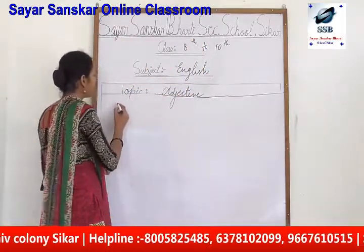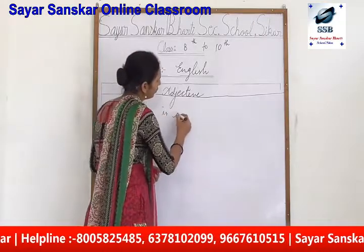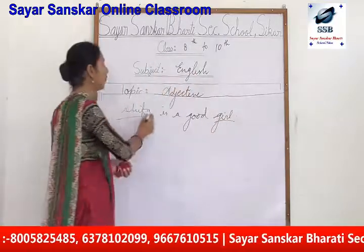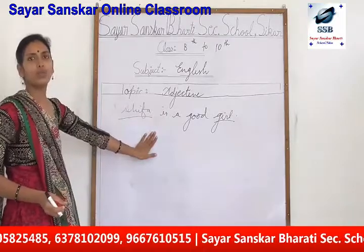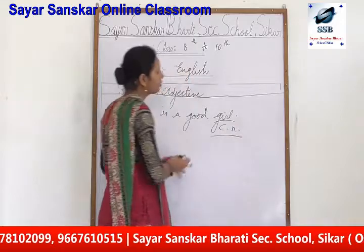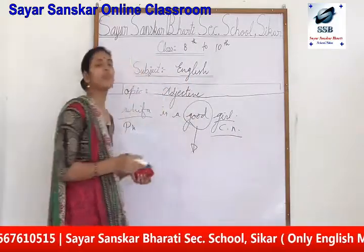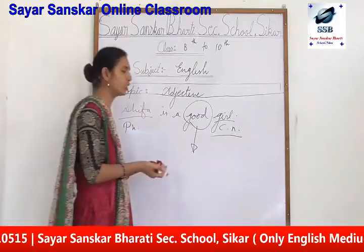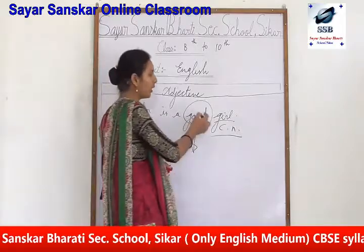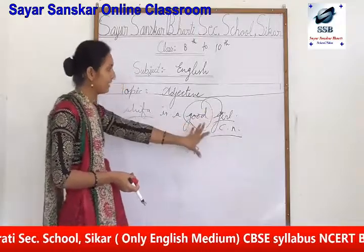Just for example: Shifa is a good girl. As we discussed, Shifa and girl — these both are nouns in this sentence. Shifa is a proper noun and girl is a common noun. So both these nouns are being modified by the word 'good', and 'good' is the modifier, or adjective. Modifier means that which modifies or adds something. So here it is modifying Shifa — Shifa is a good girl.